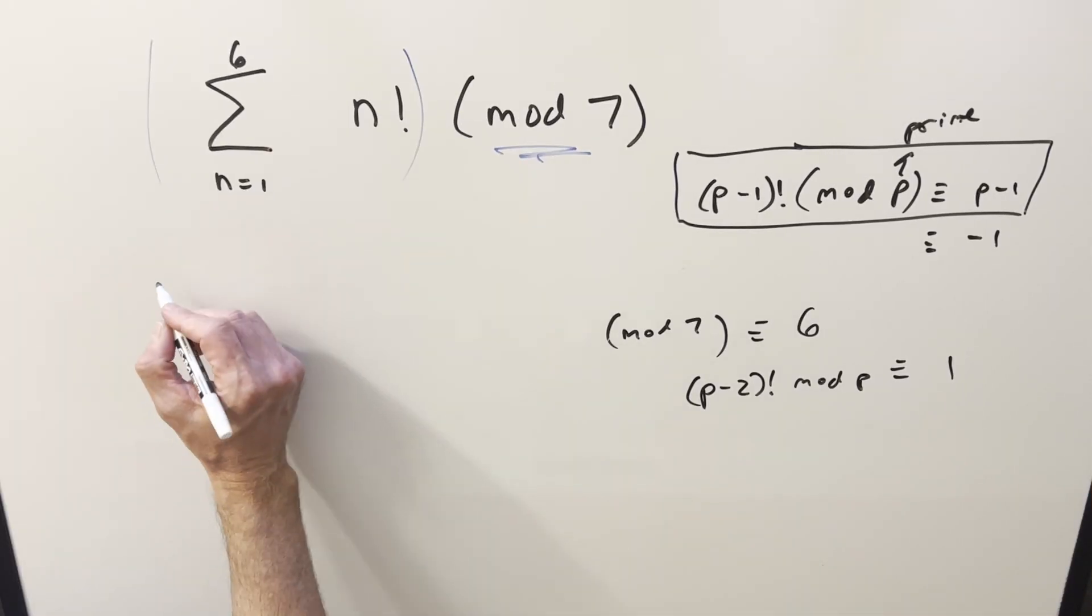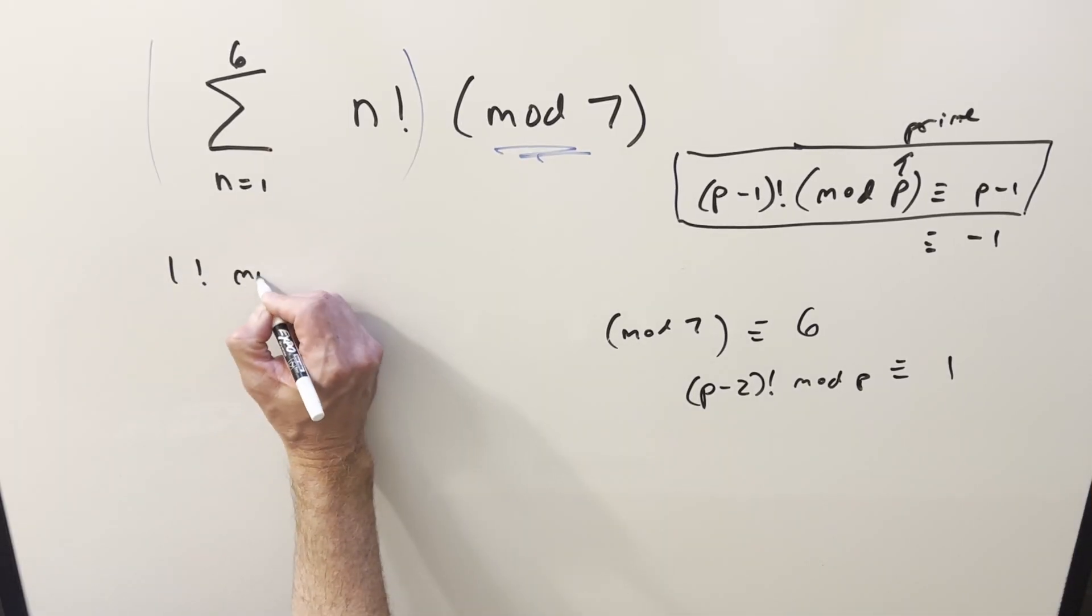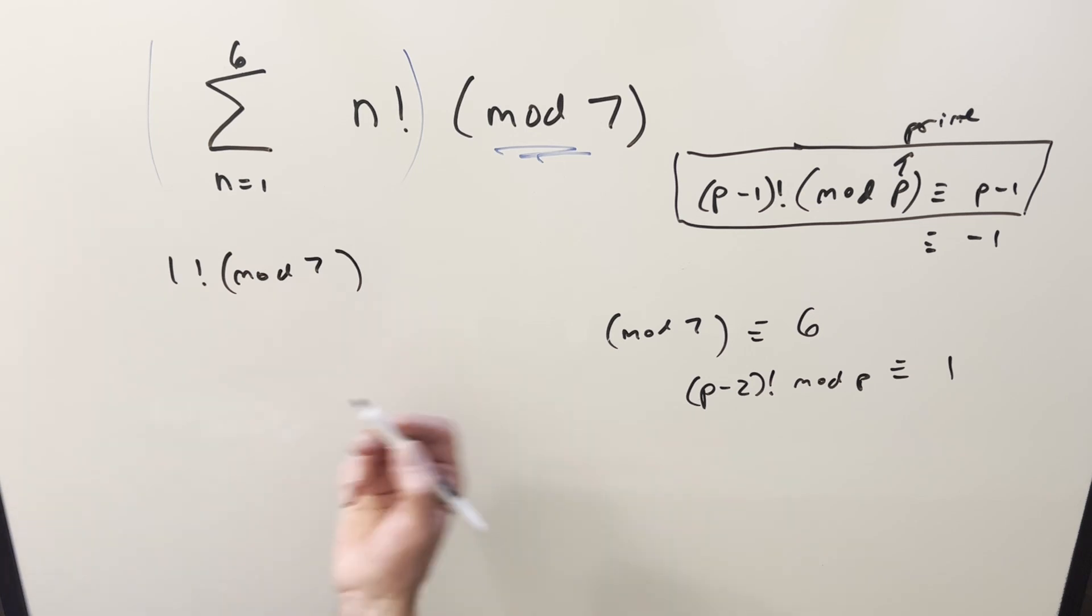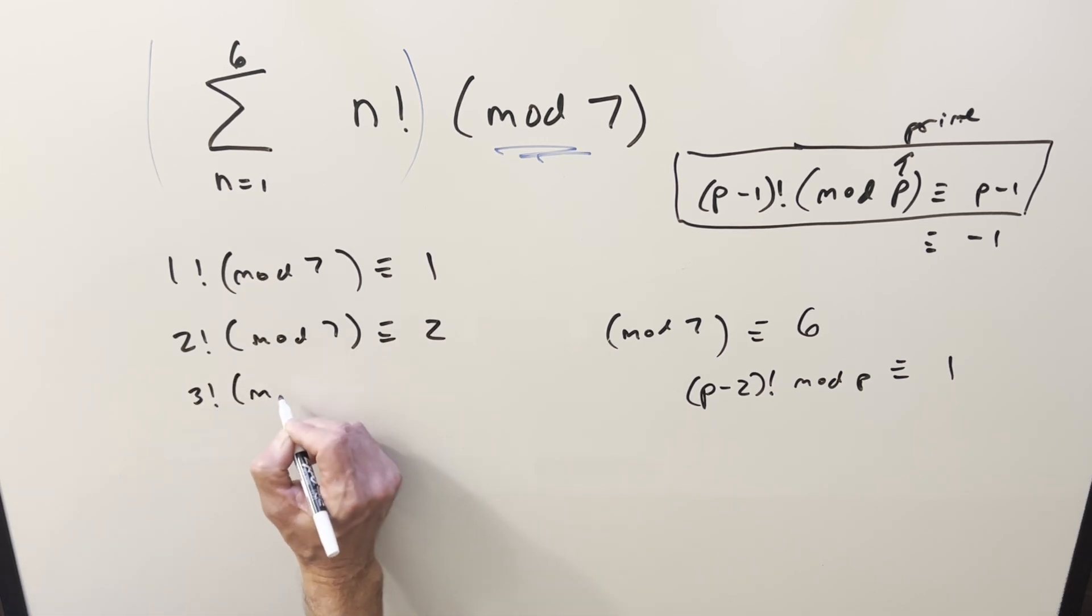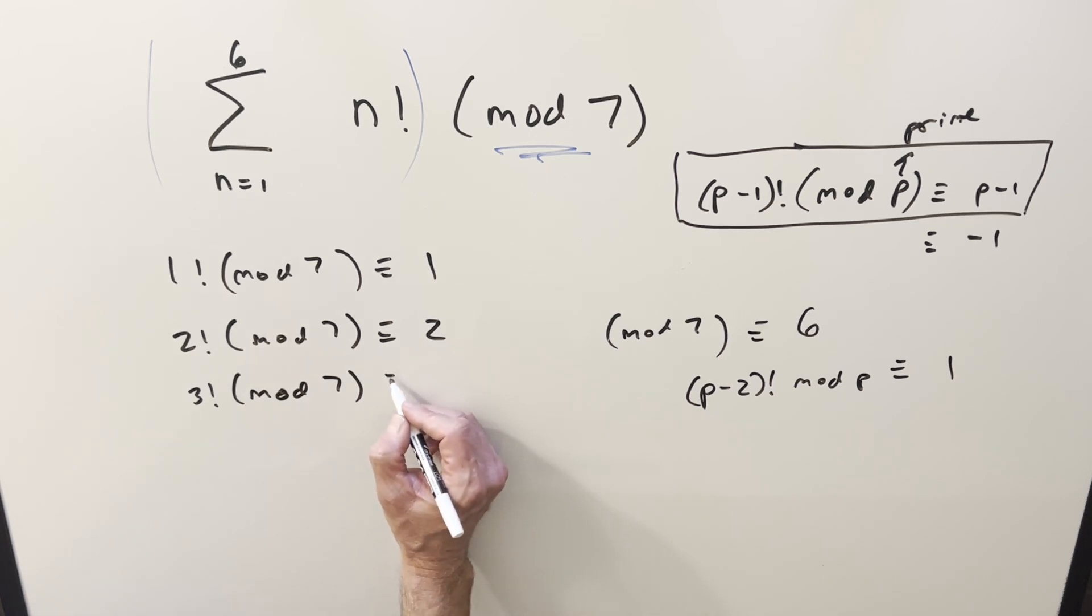So let's just sum up all these terms 1 to 6 so for 1 factorial mod 7 I mean that's just 1 so put down a 1. Same thing with 2 factorial that's going to be easy that's a 2. 3 factorial now 3 factorial is 6 and we said before 6 is the same thing as minus 1. I like using the negative values it's maybe just my preference but it keeps the numbers smaller and it's going to cancel stuff off so I mean you could use 6 just as well.